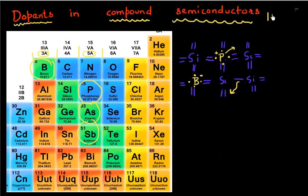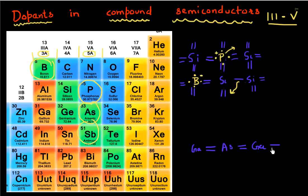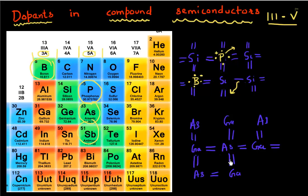Now what I want to talk about in this video is what are the common dopants in compound semiconductors — semiconductors made up of group three and group five elements. Let me draw gallium arsenide, which is one such semiconductor. In a gallium arsenide lattice, each gallium atom is bonded to an arsenic atom, which is in return bonded to a gallium atom. Note that this 2D projection is for illustration purposes only.